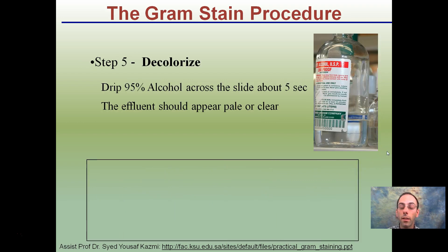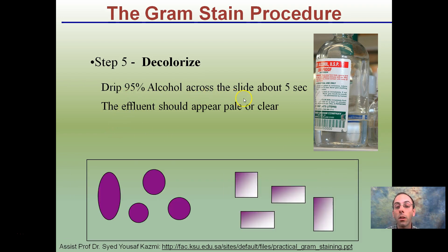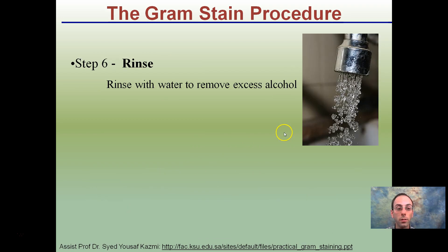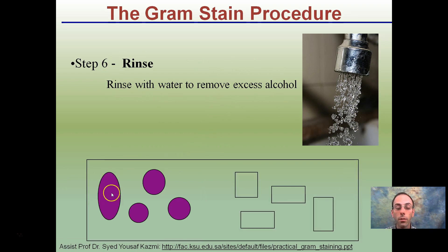Step five is to decolorize. This is an important step. Drip 95% alcohol across the entire slide for only about five seconds. This will decolorize the cells that aren't holding onto the stain very strongly — you can notice those become a lighter purple while others remain a strong purple. If you let it sit too long, it will decolorize all the cells, so not only are the steps important but also the timing. Then rinse to remove all excess alcohol, which leaves us with the purple cells and the now-decolorized cells.